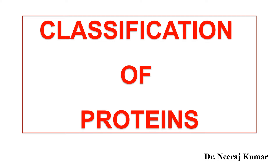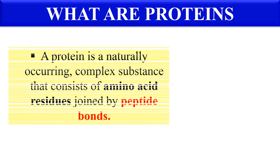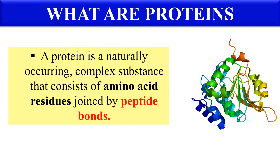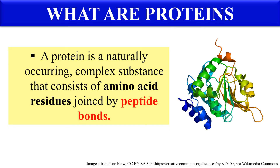Hello guys, today we will discuss the classification of proteins — how we classify proteins into various categories. So without any delay, let's start the video. Before directly going into classification, first of all we should know what proteins are. Proteins are naturally occurring substances which consist of amino acids.